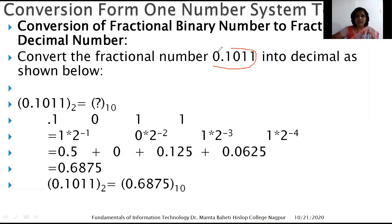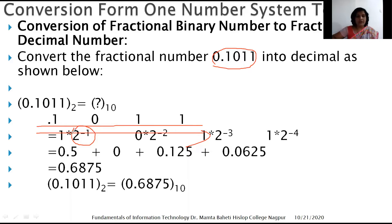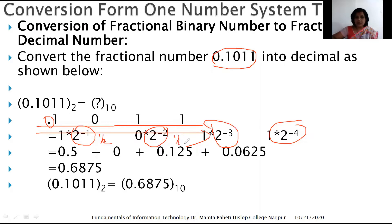First step: separate out the digits. Second step: starting from the decimal point, go from left to right and assign 2⁻¹ to the first digit after the decimal point, 2⁻² to the next, 2⁻³ to the next, and 2⁻⁴ to the last digit. So 2⁻¹ = 1/2, 2⁻² = 1/4, 2⁻³ = 1/8, and 2⁻⁴ = 1/16.